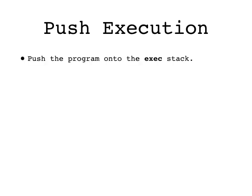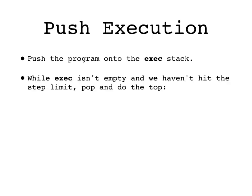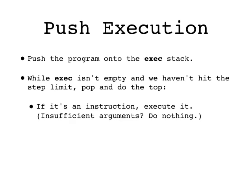When a Push program is executed, it is first pushed onto the exec stack and then, while the exec stack isn't empty and a predefined step limit hasn't yet been reached, the top item is popped and processed. If that popped item is an instruction, then it is executed by popping the inputs that it needs, doing the instruction, and pushing the outputs onto the right stacks. If the stacks don't have everything the instruction needs, then it just does nothing.